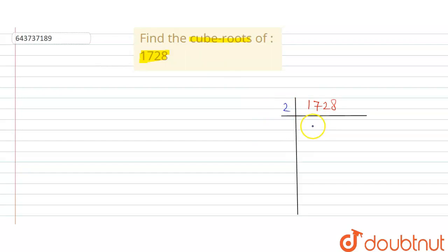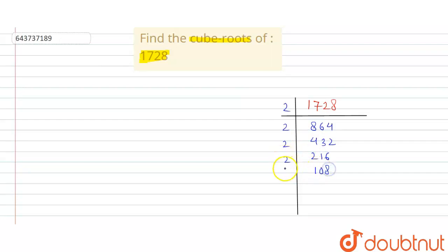So this is two times. This comes out to be this number and then this is 4, 3, 2. Again two times — so this is 2, 1, 6. Again two times, so this will come out to be 108, then 54, and then 27.